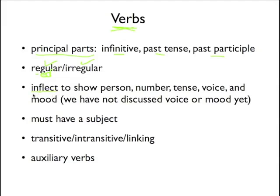Verbs inflect — which really just means change somehow — to show person, number, tense, voice, and mood. We have not yet talked about voice or mood, but we've talked about person as in first, second, third; number as in singular or plural; and tense in the first six tenses we learned. Remember that a verb has to have a subject, and the subject has to be a noun. A noun cannot be a subject unless it has a verb.